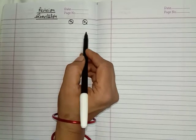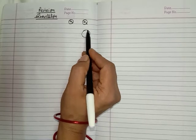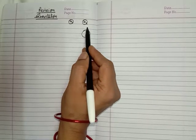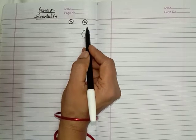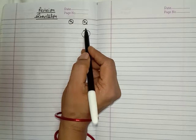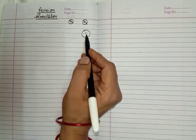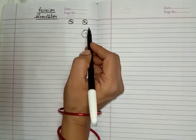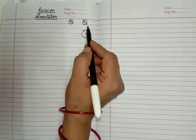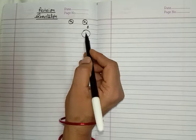What about gravity? For the earth, it always attracts other objects towards its centre, and this attraction force is called the gravitational force or the gravity of the earth. The acceleration produced in an object which falls on the earth is called the acceleration due to gravity.